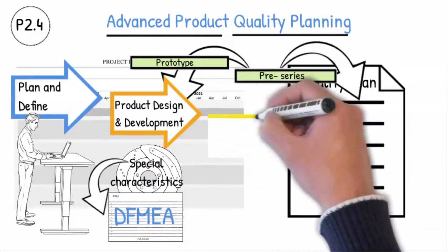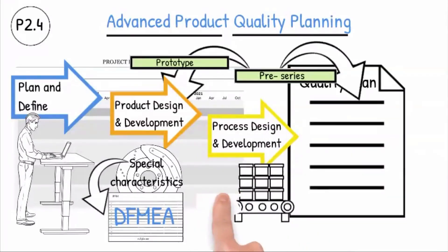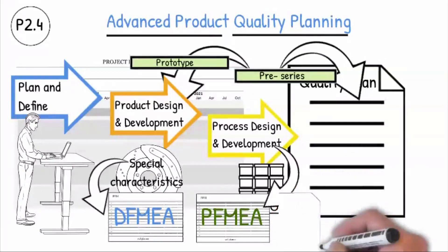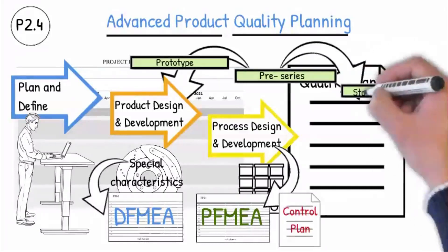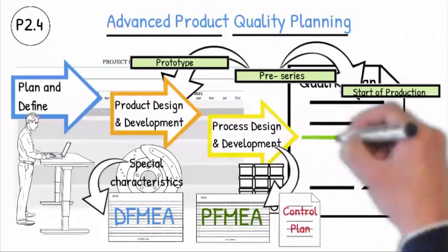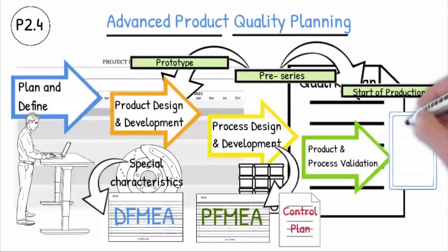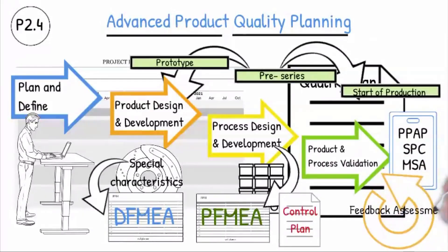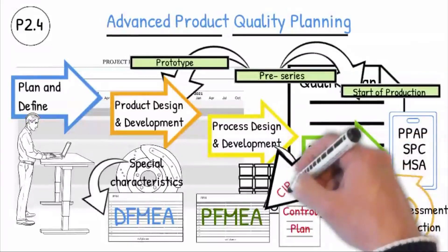Process design and development ensure that manufacturing techniques and measurement methods like SPC and MSA that will ensure process capability are included in the process FMEA and control plans. Product and process validation of the process quality and volume capabilities is the focus of process capability studies and that the PPAP is ready for submission. Production will start upon PPAP approval. The feedback assessment and corrective action focus on the continuous improvement of the manufacturing process by applying the PDCA approach and updating the process FMEAs and the control plans.